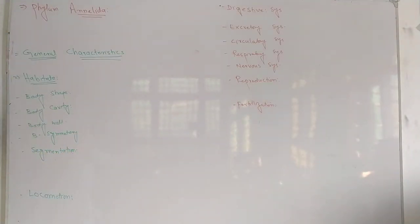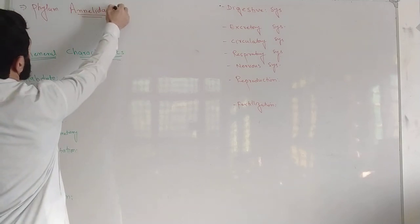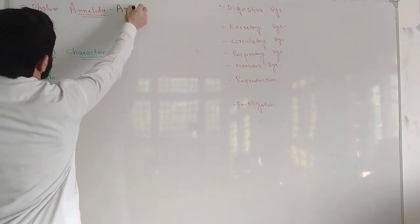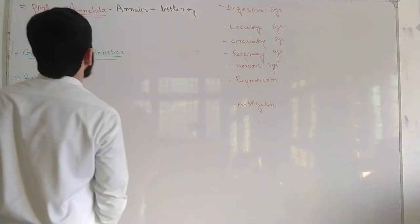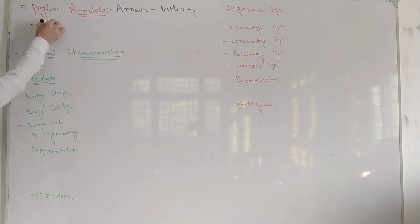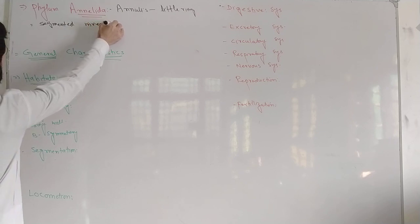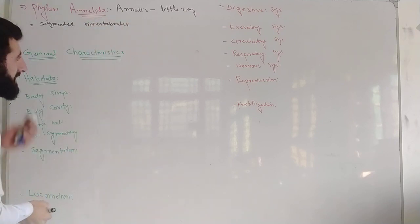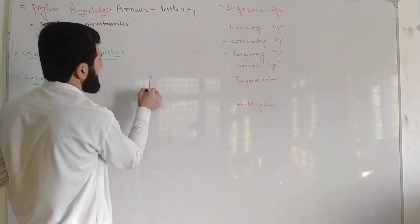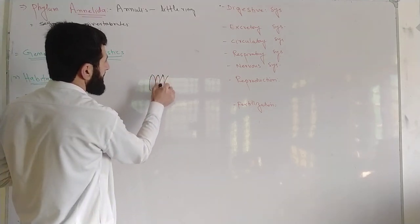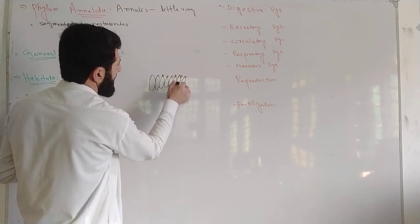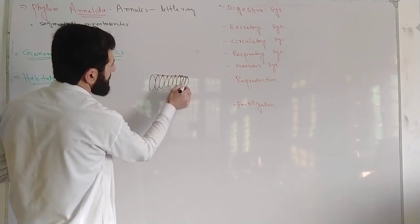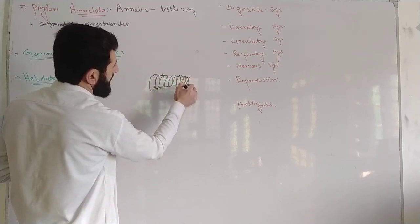In Annelida, the term Annelida is from Annolis. Annolis means little ring. So these are segmented invertebrates. These bodies have little rings just like that—one ring, a second ring. The body of these organisms contain little rings, so these organisms are called Annelids.